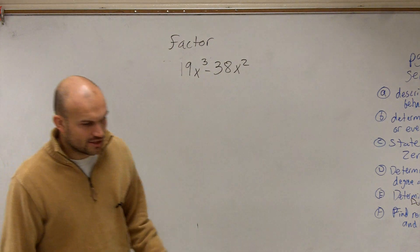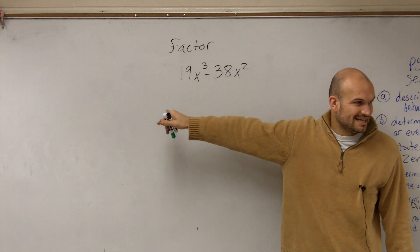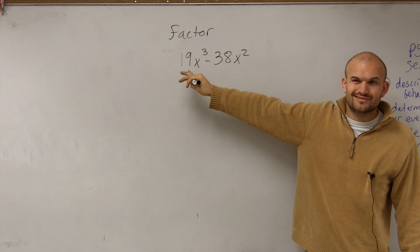And so you look at this, Hazel, and you say, can you write this as a difference of two squares? Can you write 19 as a squared number? No. Can you write x cubed as a squared number? No.